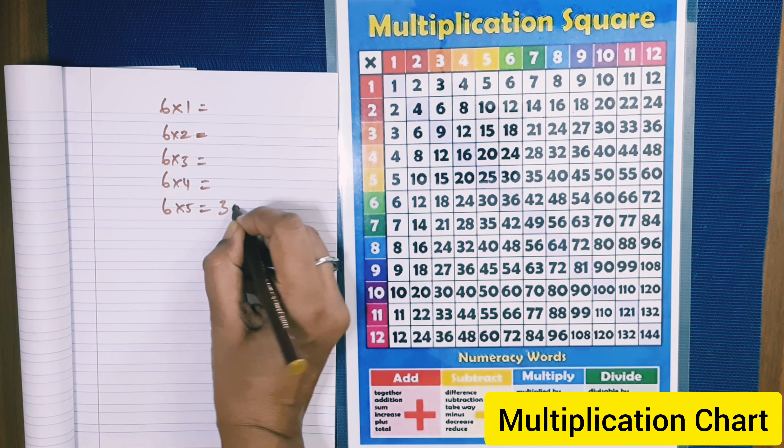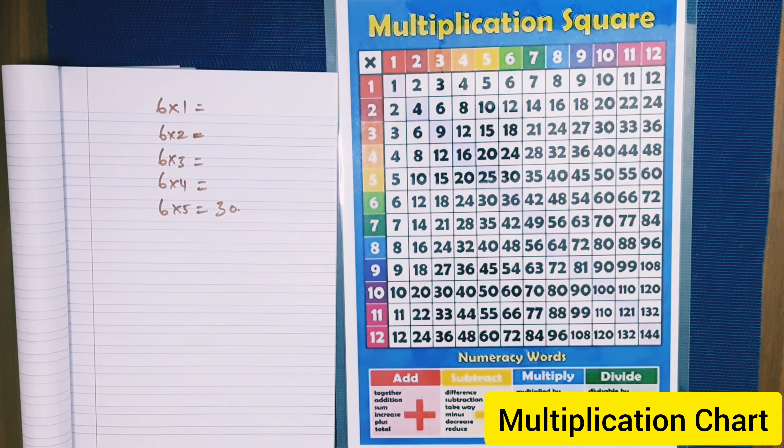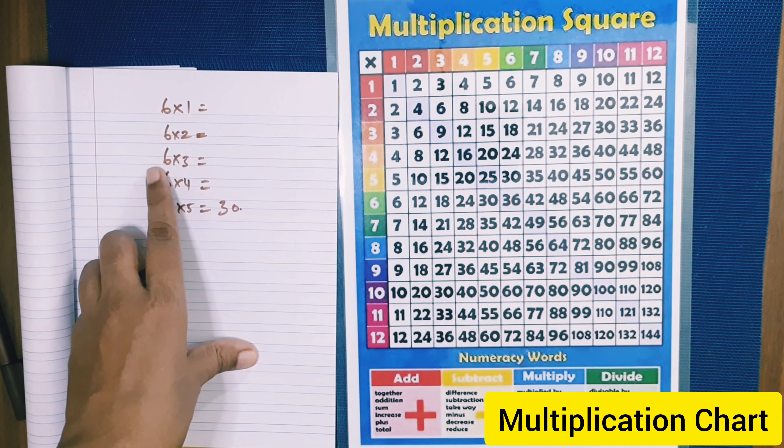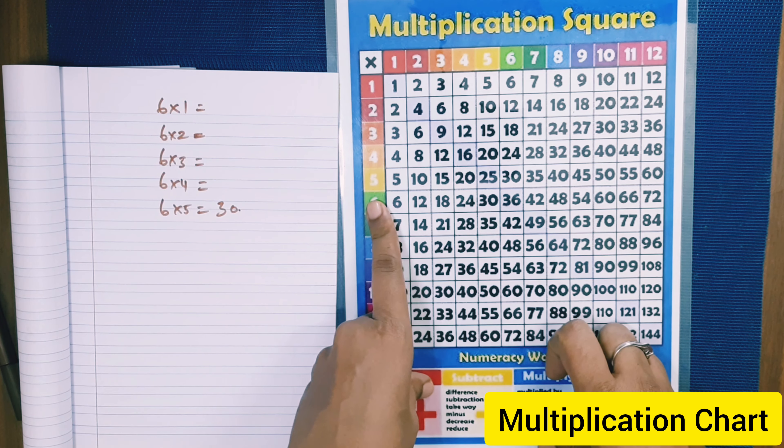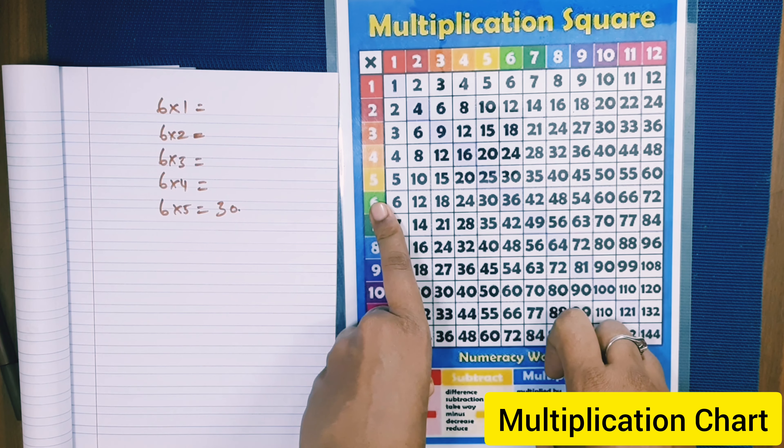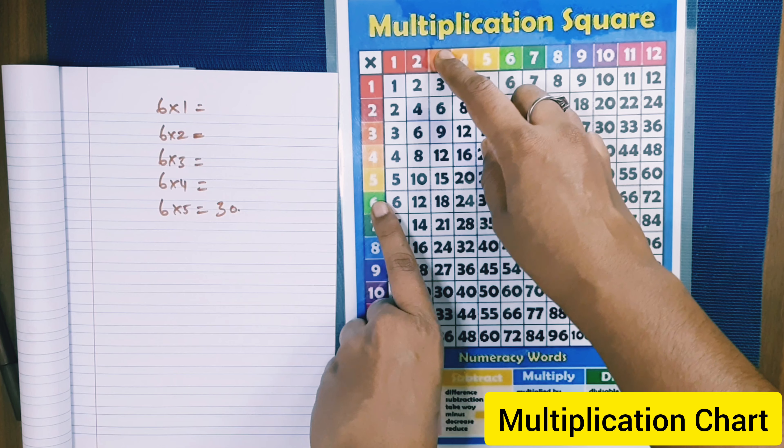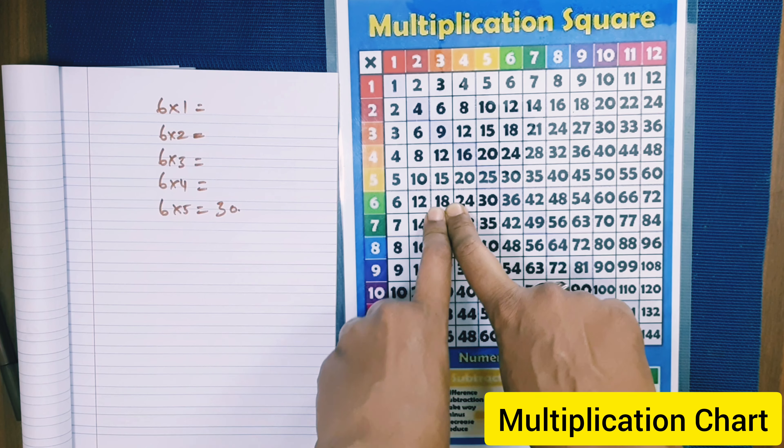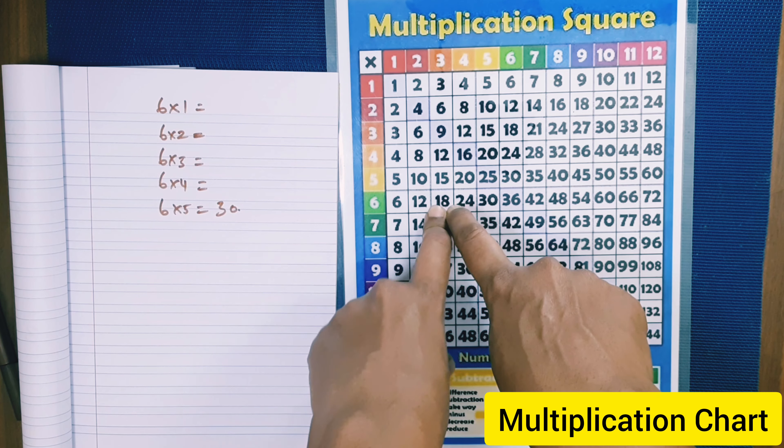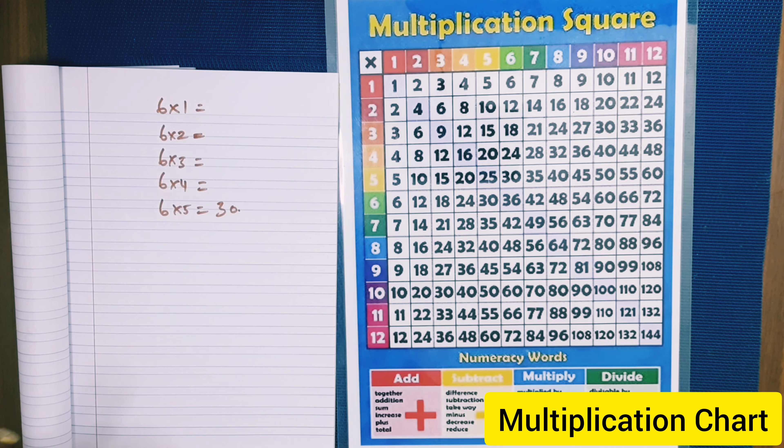So 6 multiplied by 5 is 30. Ask the child to write. Okay, let us do 1 more. 6 multiplied by 3. So show 6 using your left index and 3 using right index. So the square where they meet shows the result. So 6 multiplied by 3 is 18.